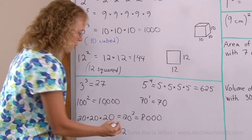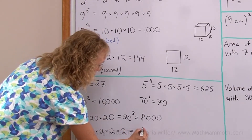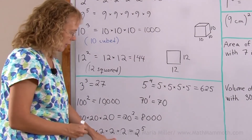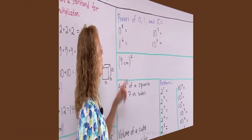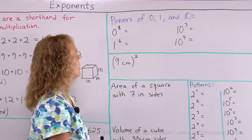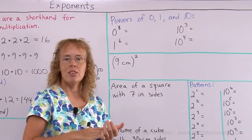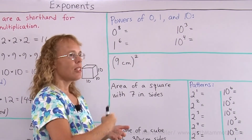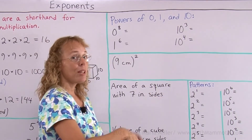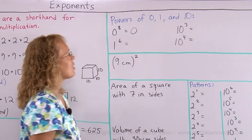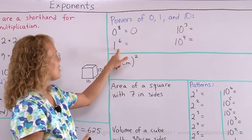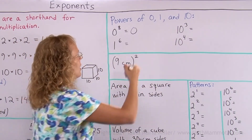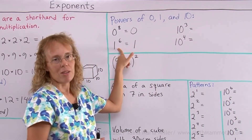Here is two times two times two times two times two times two — it takes a long time to say even — but it is just two to the fifth power. To solve it: four times two is eight, then sixteen, thirty-two. These are special powers of zero — zero to the second power, zero to the fifth power, zero to the eleventh power. All of those are powers of zero. Zero to the eighth power would be zero times zero times zero — you see what the answer will be: zero. All powers of zero are just zero. One is also pretty easy. One to the sixth power is one times one times one times one times one times one, but all you get is just one — and so also for other powers of one.